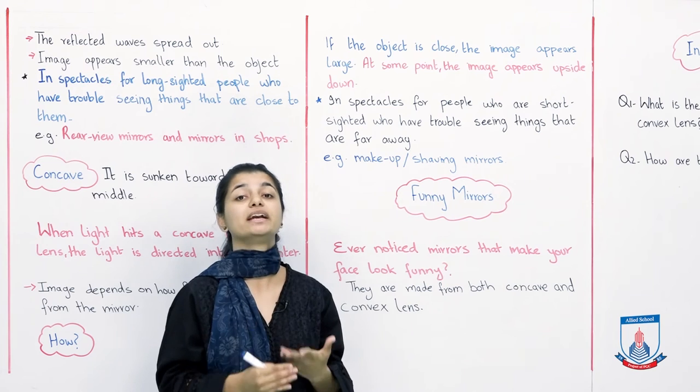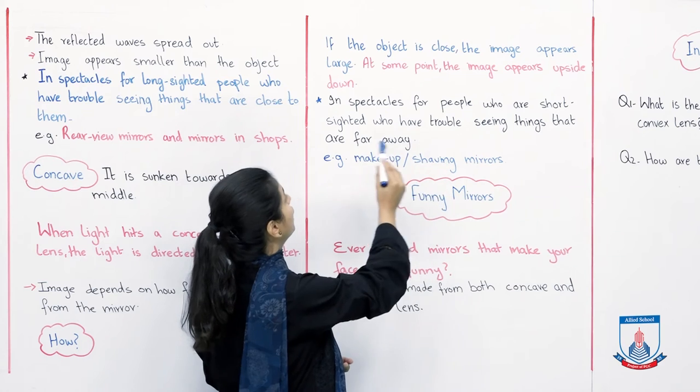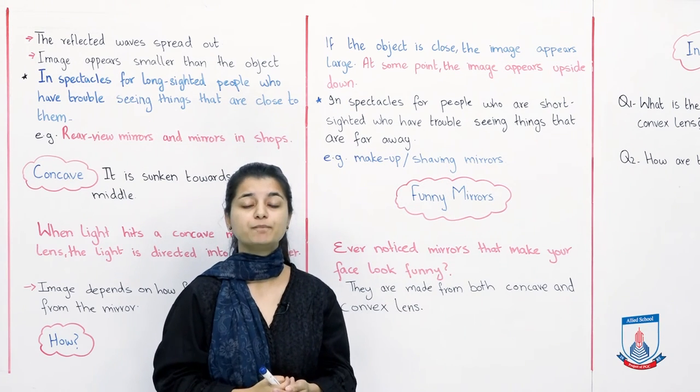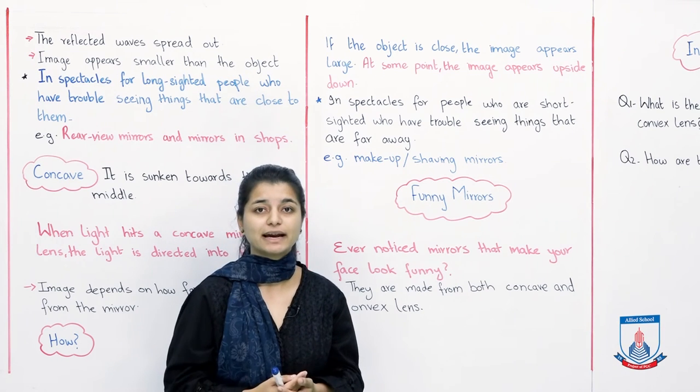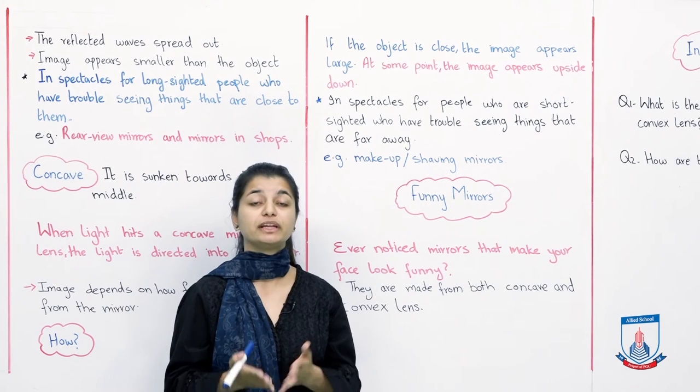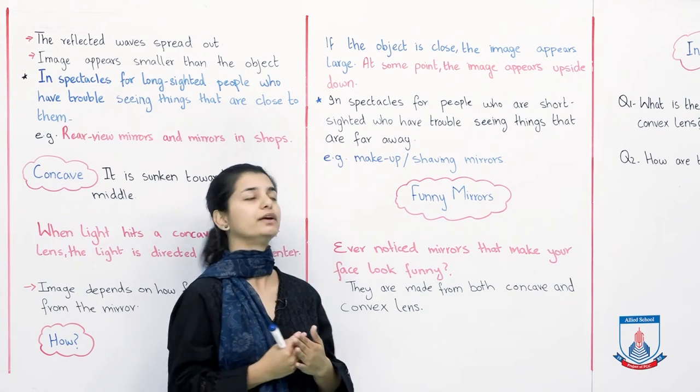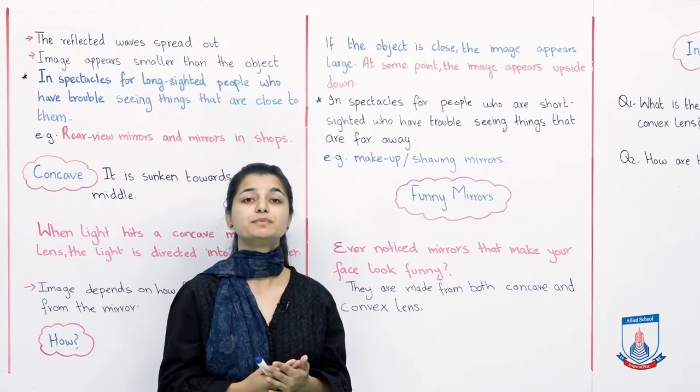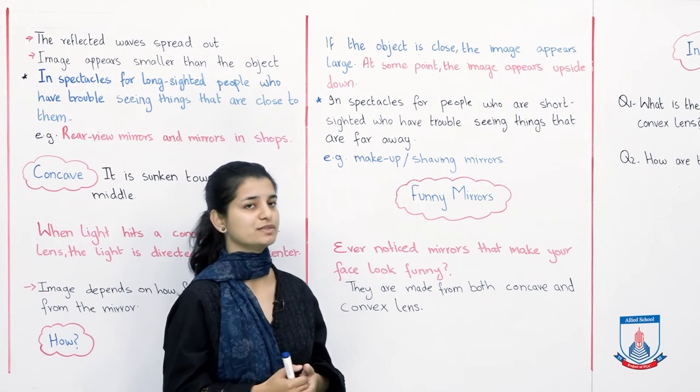Now we will see where it is used. In spectacles for people who are short-sighted, who have trouble seeing things that are far away. Convex lens we use for people who are long-sighted. Here we are saying that these people are near-sighted and they have trouble seeing things that are far away. So for those people, instead of convex lens, we use concave lens.